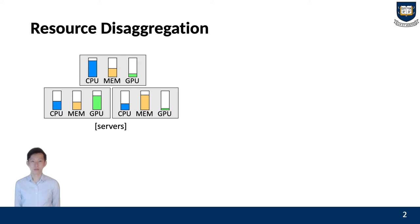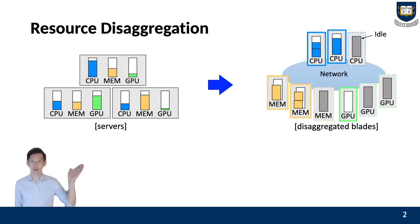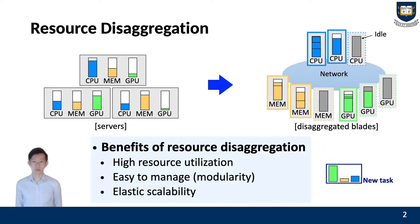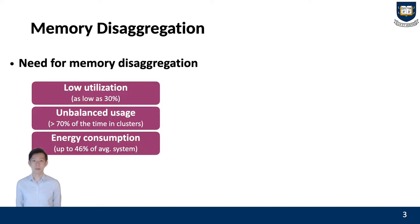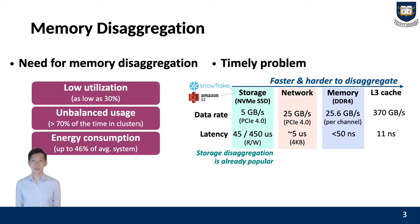Resource disaggregation separates a monolithic server into each type of resource and connects them over a network. It can provide many benefits such as high resource utilization, modularity, and elastic scalability. Among other resources, we believe memory disaggregation is important and interesting. Memory in today's data centers suffers from low utilization, unbalanced usage, and high energy consumption. Memory disaggregation is also a timely problem — as network performance increases, resource disaggregation becomes more feasible. Storage disaggregation is already popular, and we believe memory disaggregation is the next milestone.